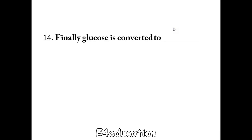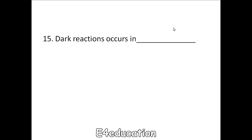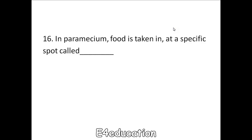Assimilatory. Finally, glucose is converted to starch. Dark reactions occur in the stroma. In Paramecium, food is taken in at a specific spot called the cytostome.